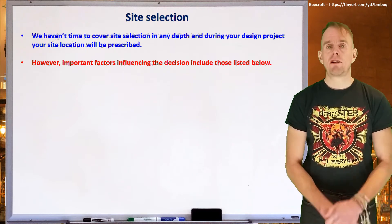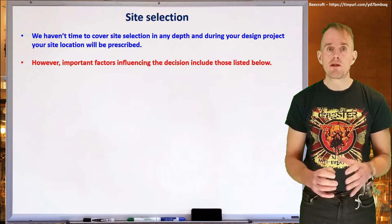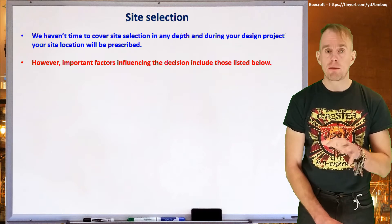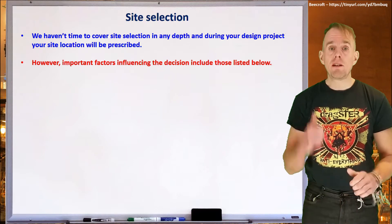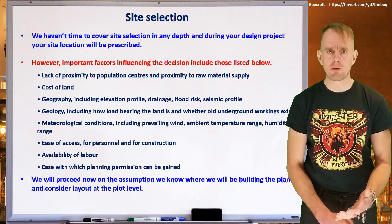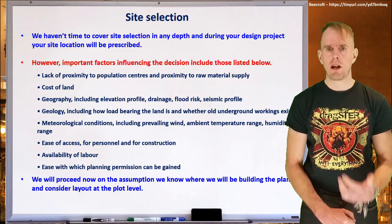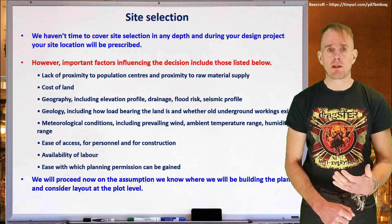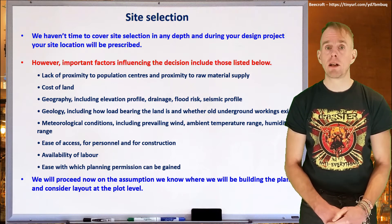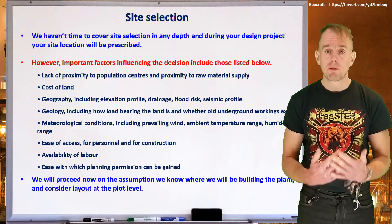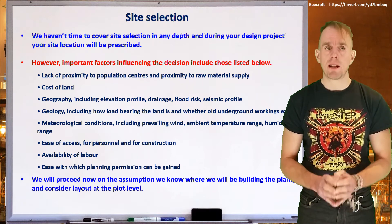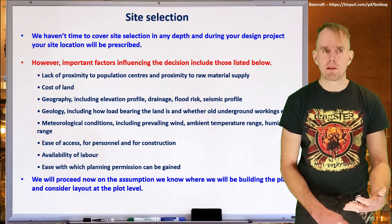Let's think about some of the criteria when choosing where to put a site. When you come to do your design project, your site and location will be prescribed for you, so you'll have no choice. But the list I'm going to give now are the considerations that will have gone into that prescription. First and foremost, we need to think about safety — specifically, lack of proximity to population centres. Chemical plant and chemical sites are inherently dangerous, often containing large amounts of flammables, sometimes toxic material, and processes running at high pressure and high temperature. These are not processes you want near a population centre.